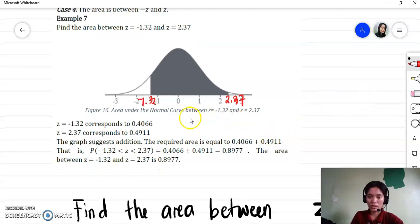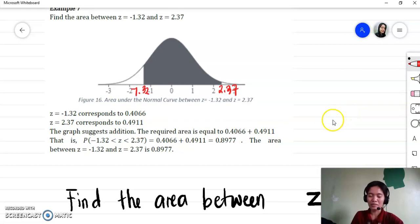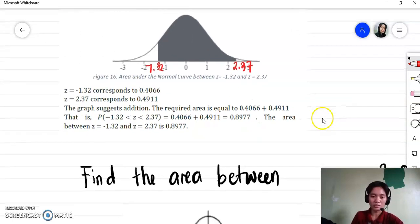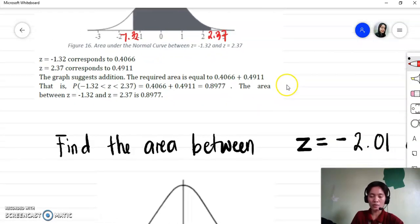You just check it in your Z table to see if the corresponding areas are correct. I won't give this as an example if it is not correct. Let us go now to our example.